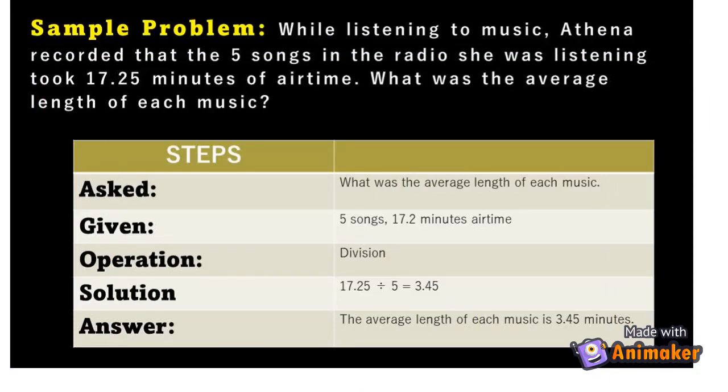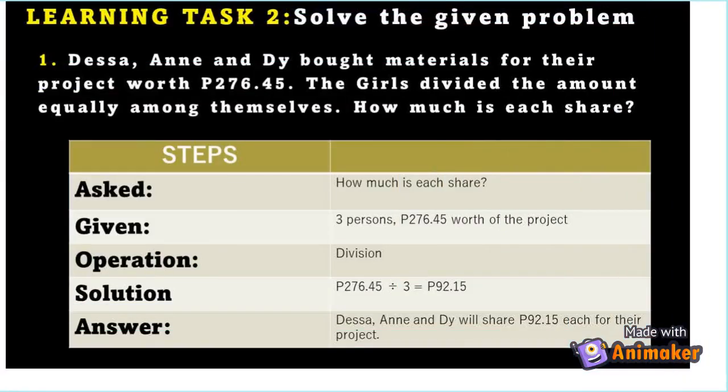While listening to music, Athena recorded that five songs on the radio took 17.25 minutes of air time. What was the average length of each song? Don't forget to apply the AGOSA method. The average length of each music is 3.45 minutes.